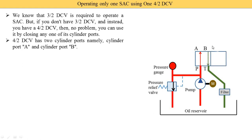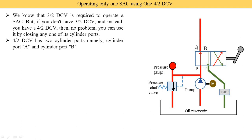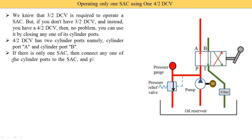Here you see the second position. In the second position there are 4 ports: port P is connected with B, port A is connected with T. This directional control valve is operated by using a manual lever. Here you see one outlet from port A and the second outlet from port B. Out of these two, if there is only one single acting cylinder port, connect any one of the cylinder ports to the single acting cylinder and plug the other cylinder port.